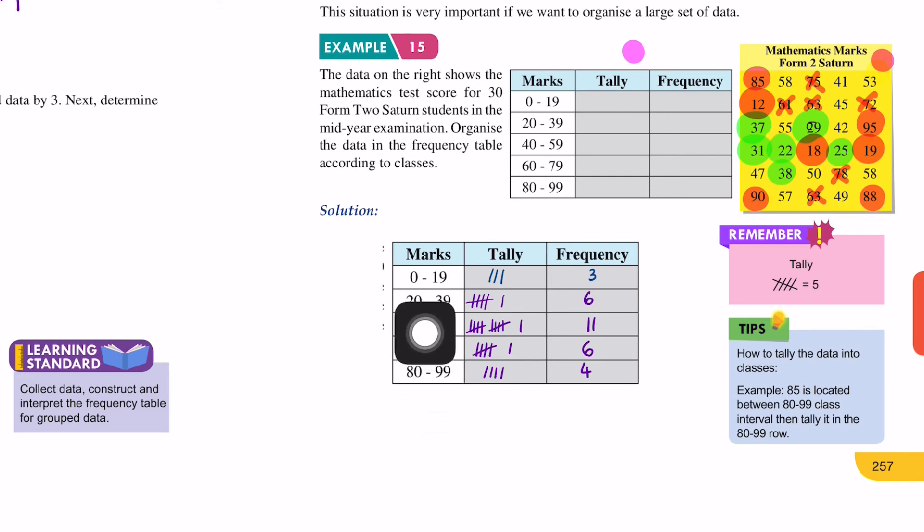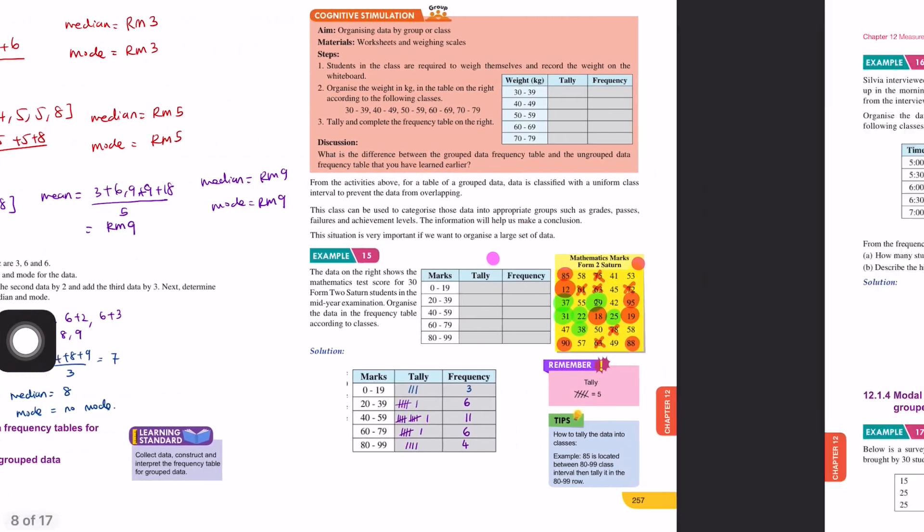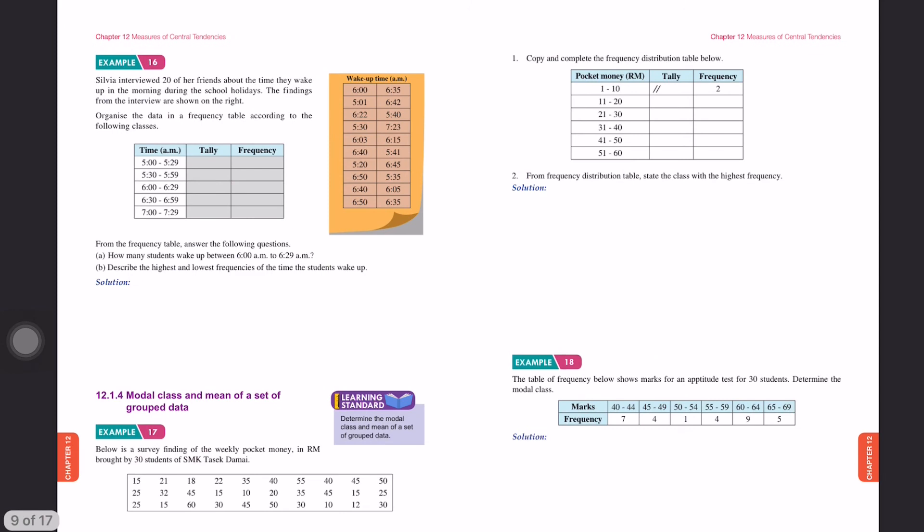This is how you convert from raw data to grouped data. Remember, grouped data means each class must have an interval. This type of interval - 0 to 19, 20 to 39 - this is what we call an interval.